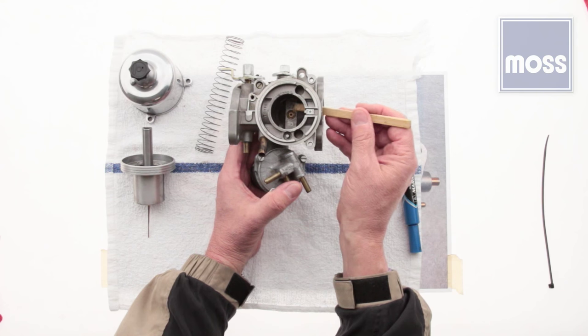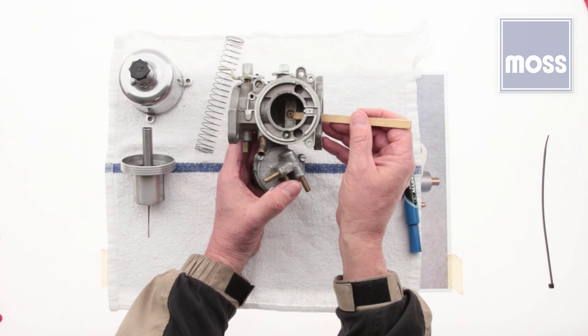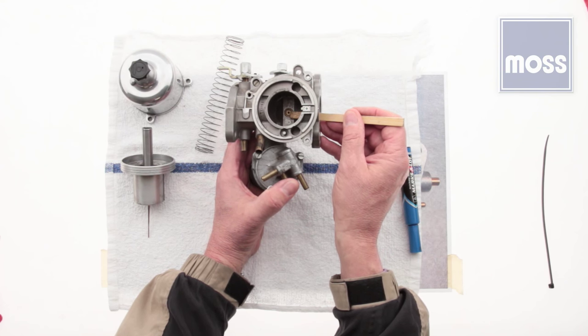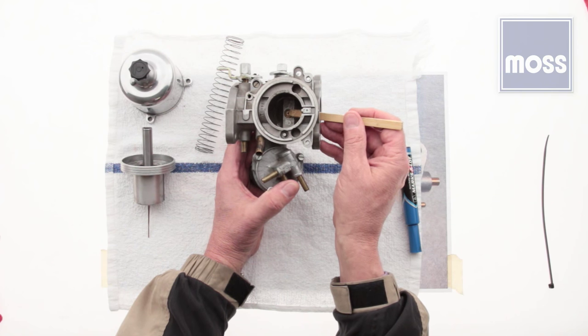There's the bridge I told you about going left to right. The piston sits down on top of that. And right in the middle, you see the jet that I was telling you about. The fuel enters the airstream right there.